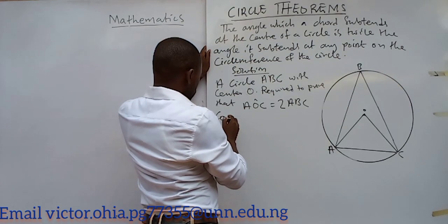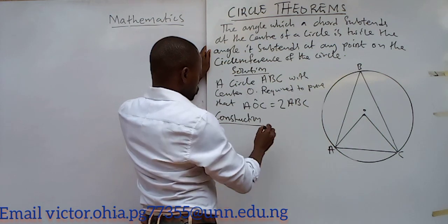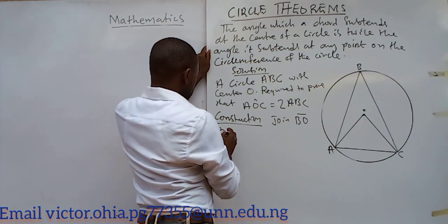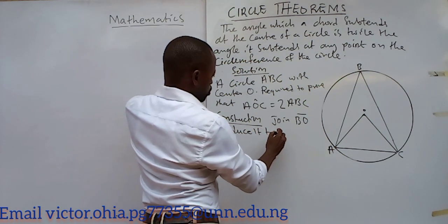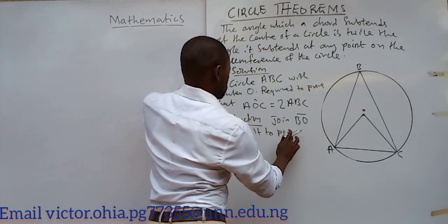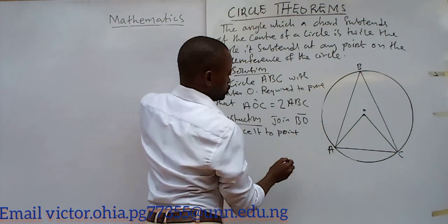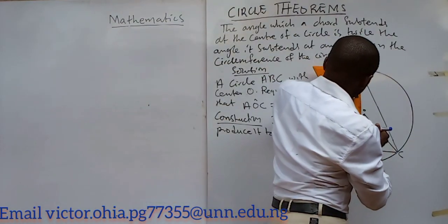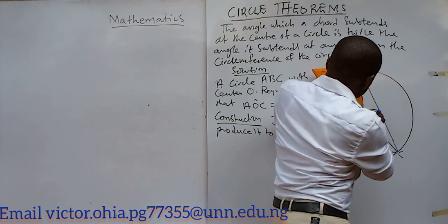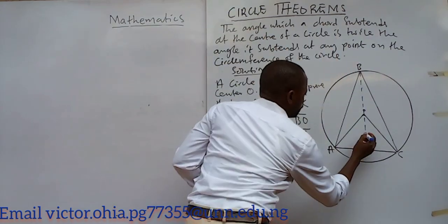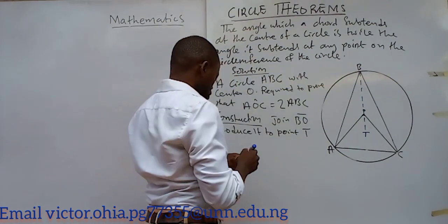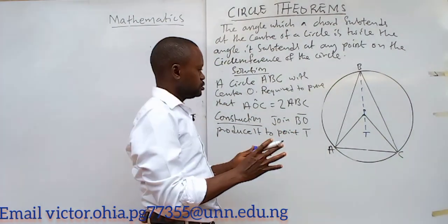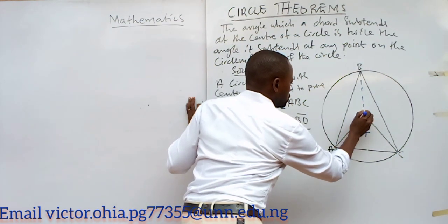Construction: join BO and produce it to a point — let's call that point T. So I will do that on the diagram. Now there is something that just happened when we drew that line through the center O.